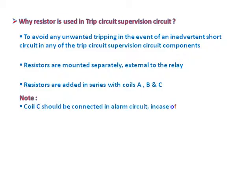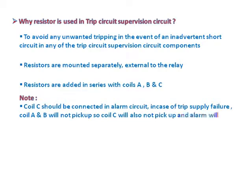Note: Coil C should be connected in the alarm circuit in case of trip supply failure. If coil A and B will not pick up, then coil C will also not pick up, and an alarm will be initiated indicating that the TCS relay is unhealthy.